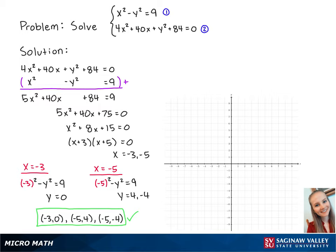We can also graph the two equations and the solution points. The standard form for the first equation is x squared over 3 squared minus y squared over 3 squared equals 1. This hyperbola has a center at 0, 0, with a and b both equal to 3, and it will open up to the left and to the right. Using this, we'll get a graph that looks like this.